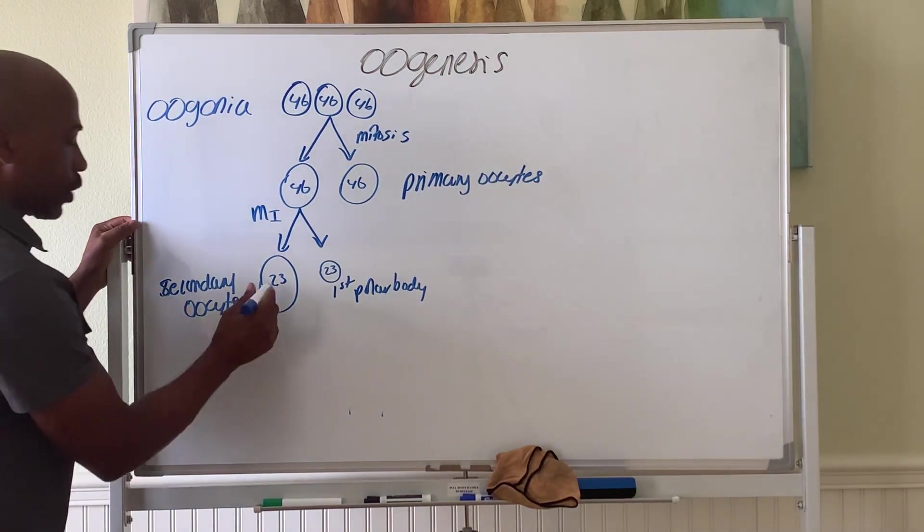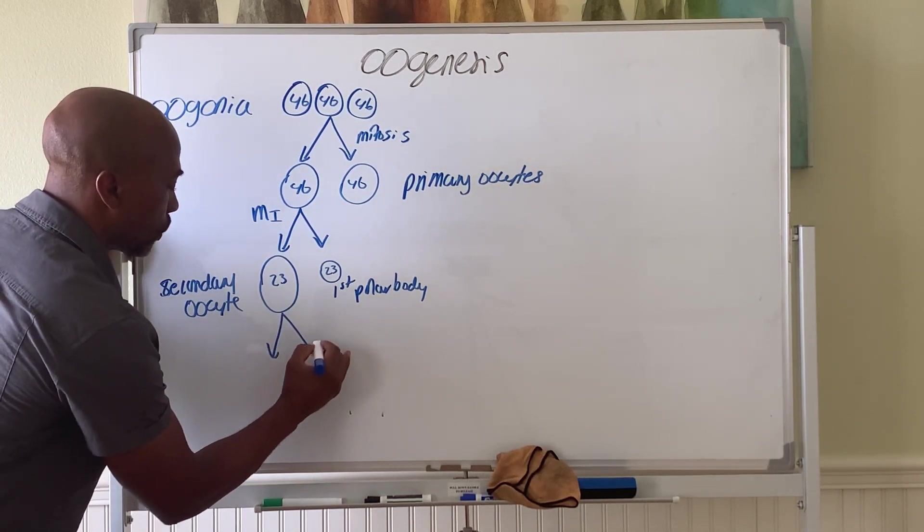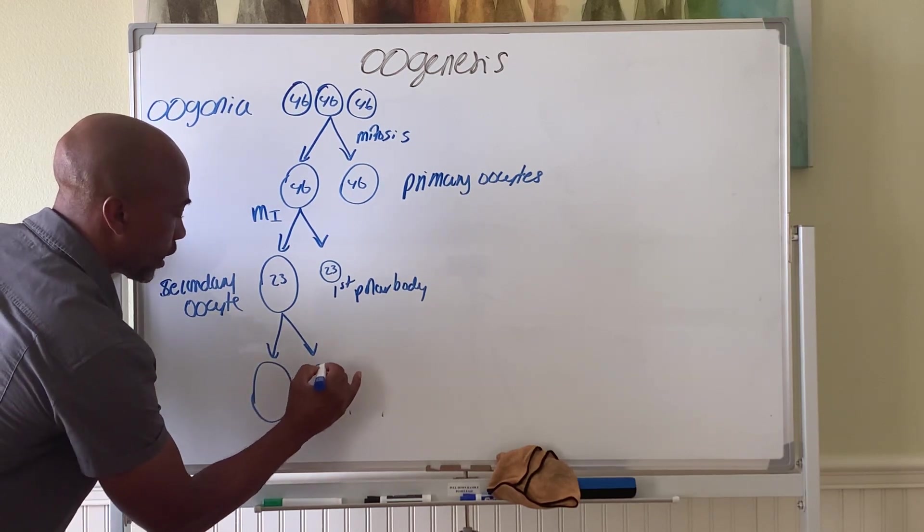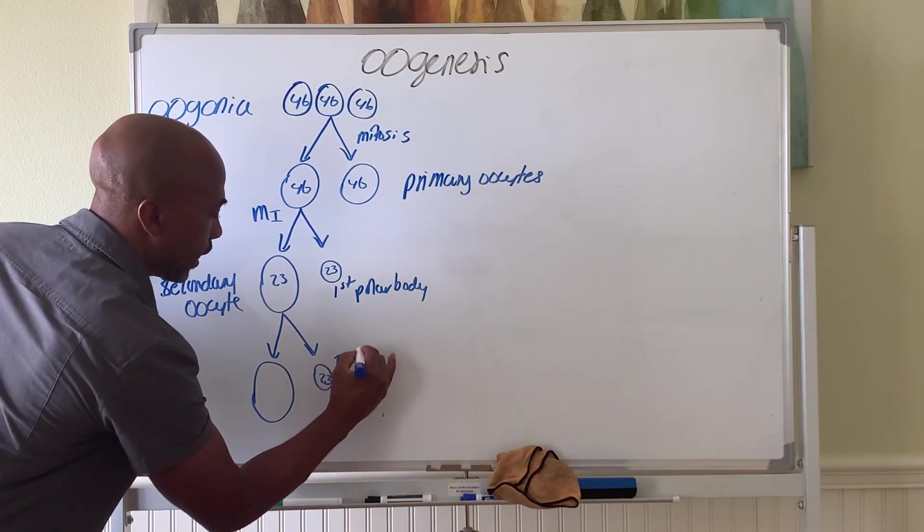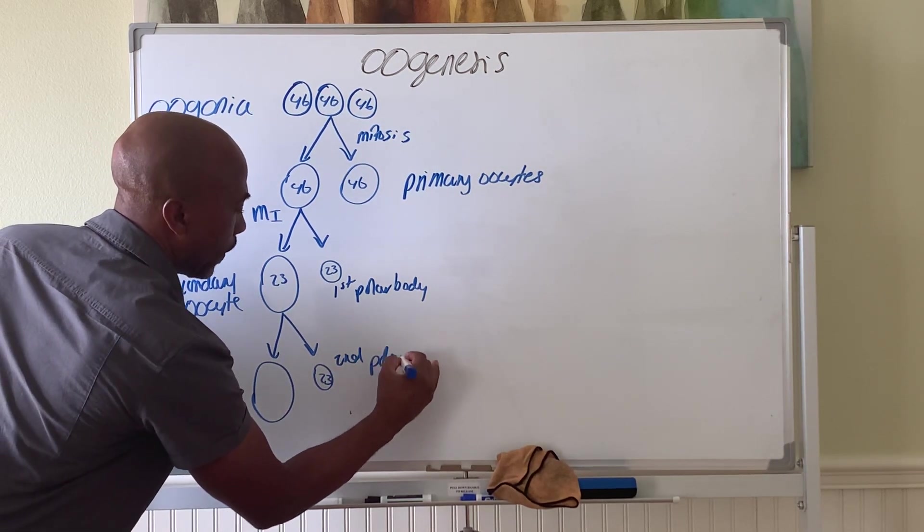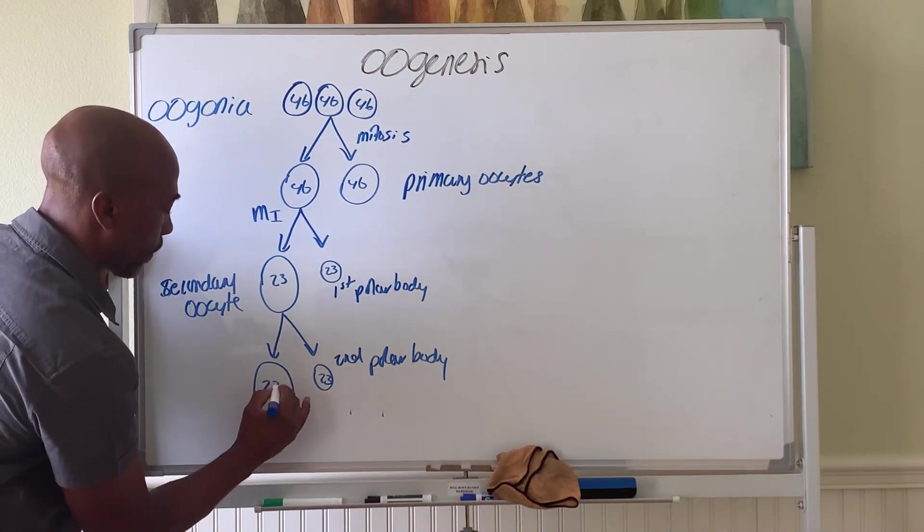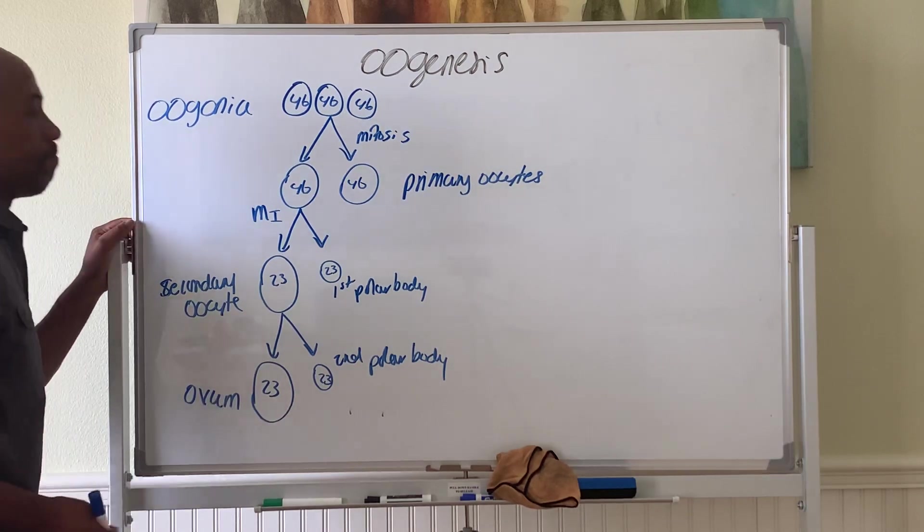And then, this one will do it again. It will do meiosis two, and again, this one will be small. It's called the second polar body. And this one now is called your ovum.